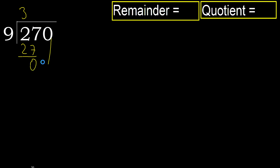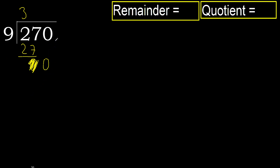Next, eliminate 0 on this side. 0 is less, therefore next — there is no number, therefore finish it. Complete with 0 — always complete with 0. Complete because here, finish it with this number.